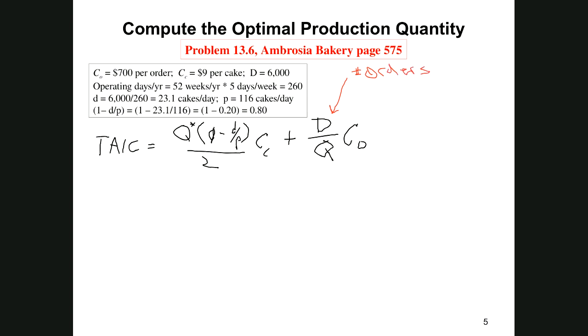We're just going to substitute in. We knew that our Q star was 1,079. So it's 1,079 times 0.8 over 2 times our carrying cost of $9, plus 6,000 divided by 1,079 times our ordering cost which is 700. When we do the arithmetic, that turns out to be $7,776.